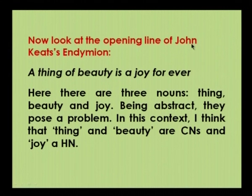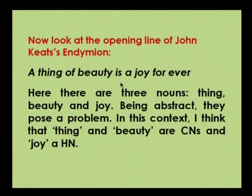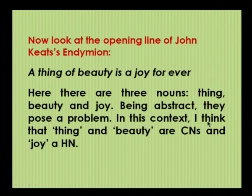Look at the opening line of John Keats's Endymion: 'A thing of beauty is a joy forever.' In this line there are three nouns — thing, beauty and joy. Being very abstract, they pose a problem. In this particular context, thing and beauty are CNs (culture nouns) and joy is an HN (human noun).